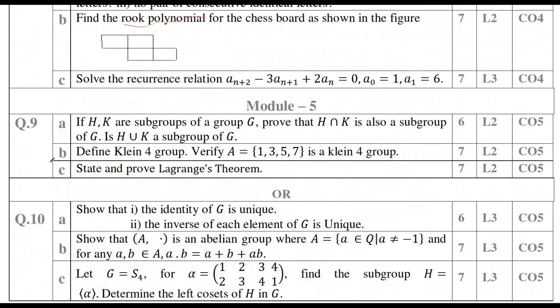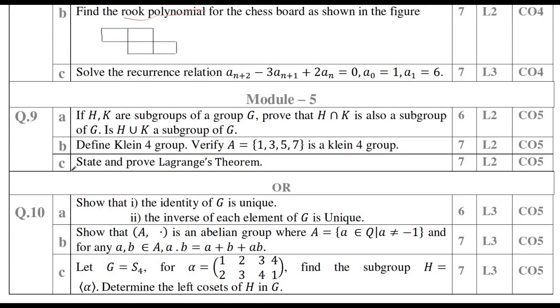Coming to the last module, Module 5. In Module 5, I prefer you to first go through Lagrange's theorem. It is a compulsory question, you can score seven marks there and then go with cyclic group problems. Definitely one problem will be there on cyclic group problems. Apart from these two, you can study problems on cyclic groups, cosets—left coset and right coset—permutation problems, and subgroup problems. Here also, minimum you can score—if you study all these questions—you can score minimum 13 marks.